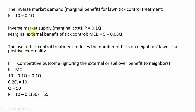The market supply, or inverse market supply, which represents marginal cost of production, is given by this equation: price equals 0.1Q. We're going to assume that lawn tick control has a spillover benefit or external benefit, and that marginal external benefit is captured by this equation, where MEB is marginal external benefit.